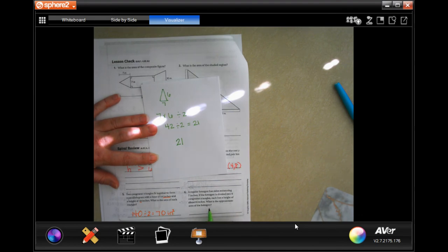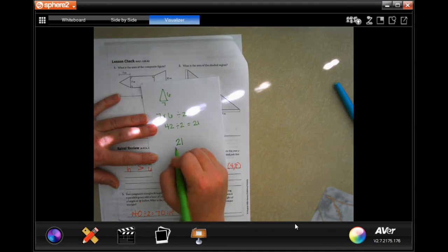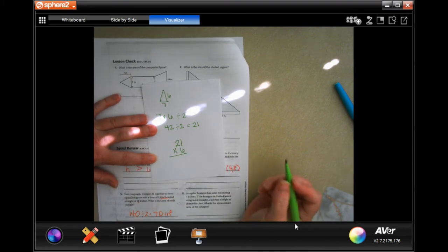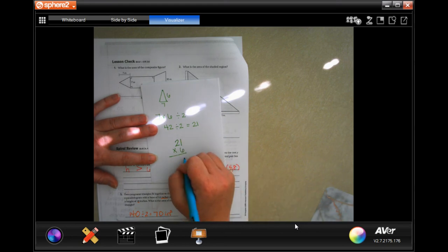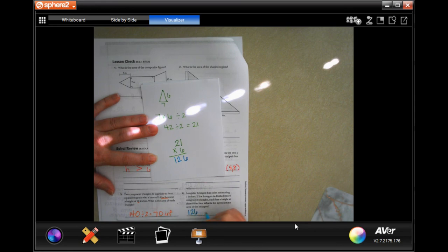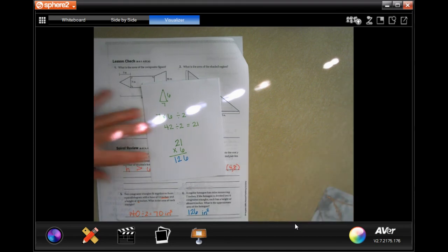It's a hexagon, so we're going to times that by 6. 6 times 1 is 6, 6 times 2 is 12. That's 126 inches, and we multiplied inches by inches, so it's inches squared. Write down your work, guys. Make sure you're getting it.